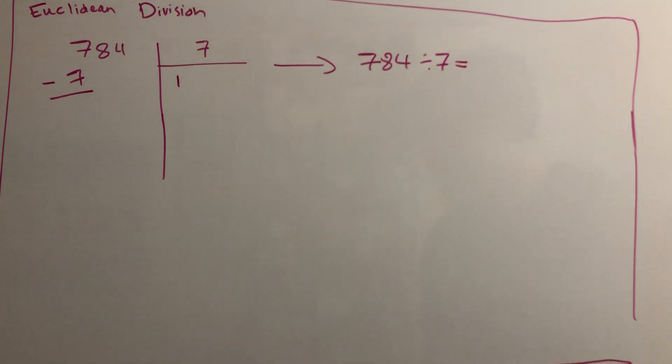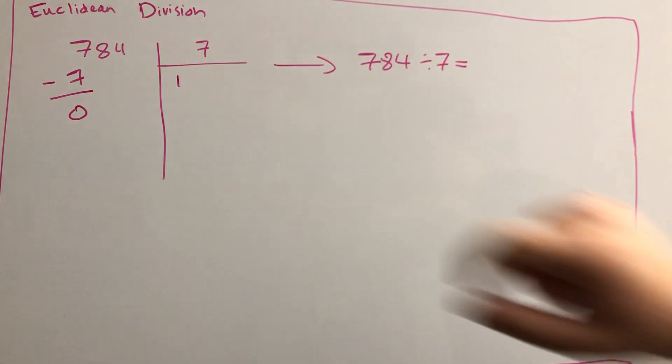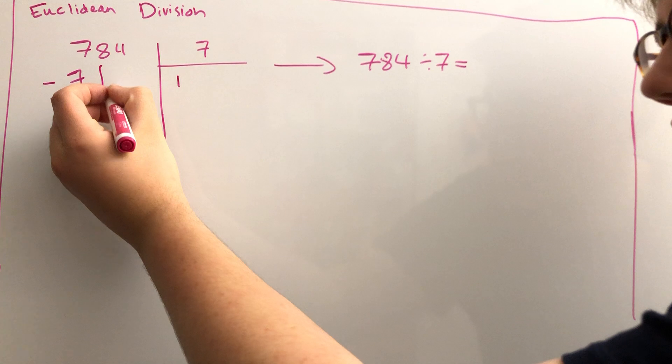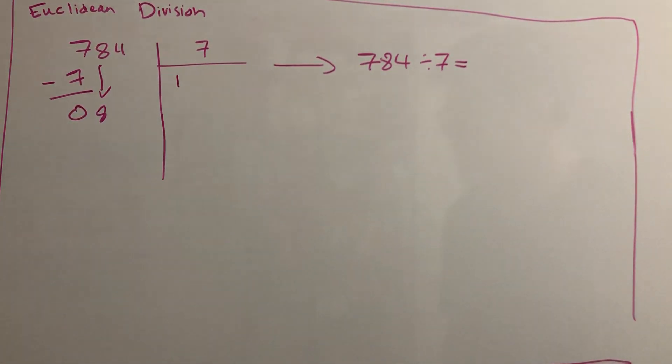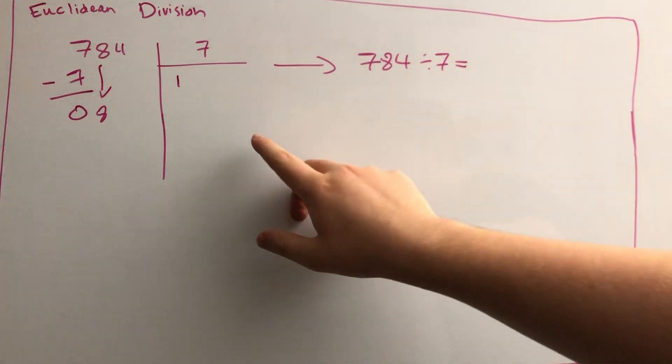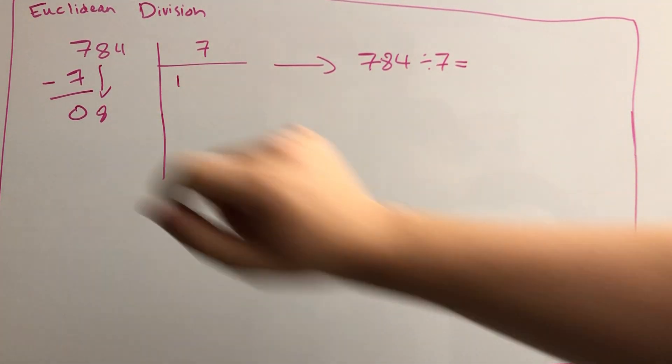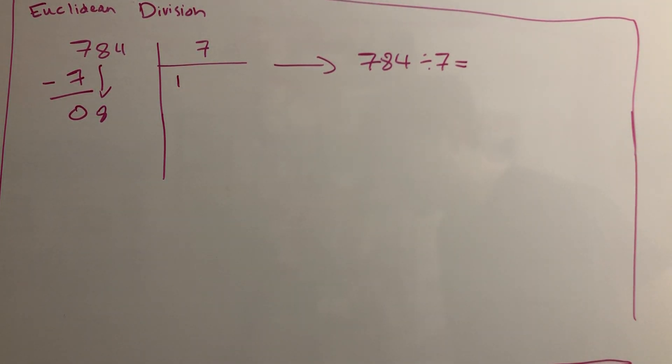In order to continue the division, you bring the 8 down. Now we ask ourselves the same question: how many times does 7 go into 8? The answer is 1, so you subtract 7 again.